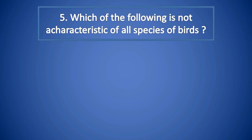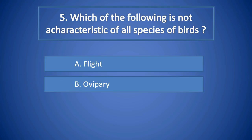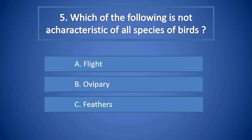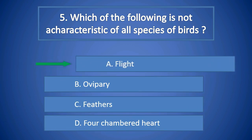Question Number 5: Which of the following is not a characteristic of all species of birds? A. Flight, B. Oviparity, C. Feathers, D. Four-chambered heart. Right answer is A. Flight.